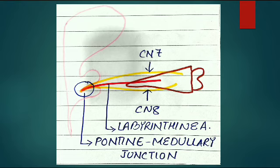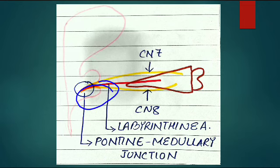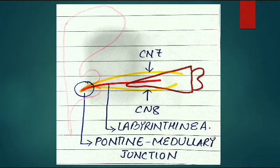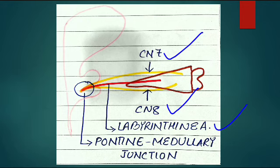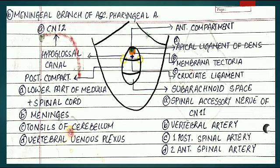This detailed diagram gives a better picture of the internal acoustic meatus and the nerves entering it. The pons, medulla, and pontine medullary junction are visible. CN VII and VIII arise from this junction and enter the internal acoustic meatus, which is present on the petrous part of the temporal bone. It's not just nerves entering - there is also the labyrinthine artery. So the contents of the internal acoustic meatus are CN VII, CN VIII, and the labyrinthine artery.